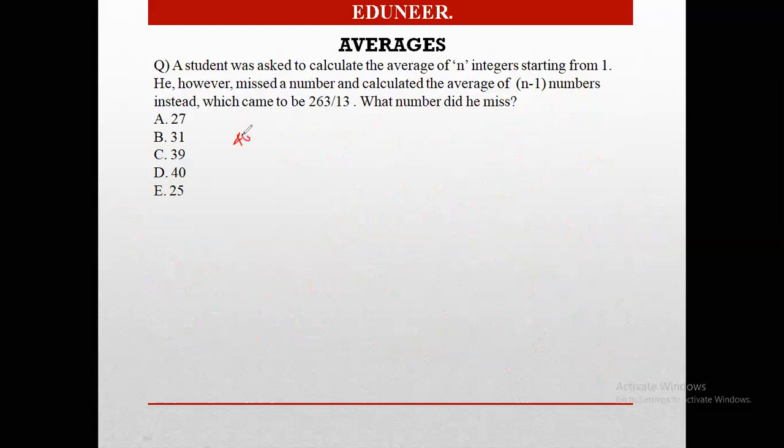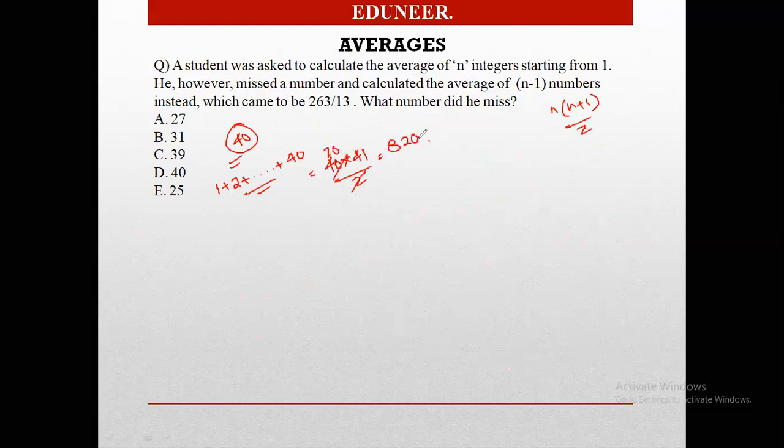So we know that we have 40 terms. Now the sum of the numbers from 1 to 40 would be 40 into 41 by 2. I hope you know this, n into n plus 1 by 2, right? So this becomes 41 into 20, which is 820. This is the sum of the first 40 natural numbers, right?